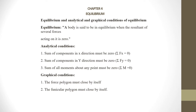We will see Equilibrium and Analytical and Graphical Conditions of Equilibrium. First of all, equilibrium is defined as: a body is said to be in equilibrium when the resultant of several forces acting on it is zero. So, when the resultant of forces acting on the body is zero, the body is said to be in equilibrium. For that, there are Analytical and Graphical Conditions.